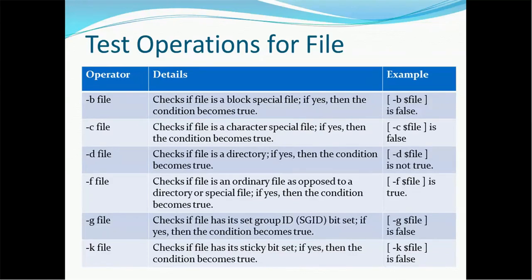Hyphen g file checks if the file has its set group ID, that is the SGID bit, set. If yes, then the condition becomes true. If you would like to know more about SGID, you can refer to my previous videos where I explain it in detail. Hyphen g followed by the file name checks whether the group ID bits are already set or not.